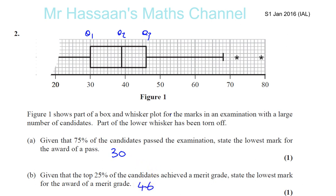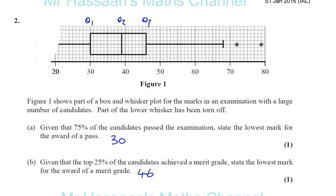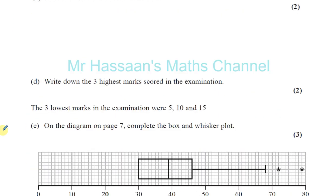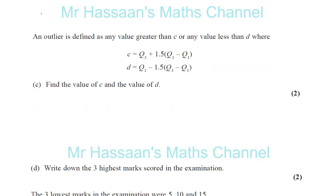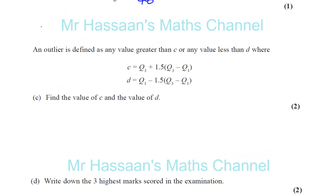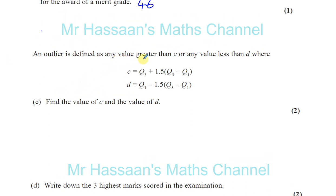Part C. It says, an outlier is defined as any value greater than C or any value less than D, where C is Q3 plus 1.5 times Q3 minus Q1.